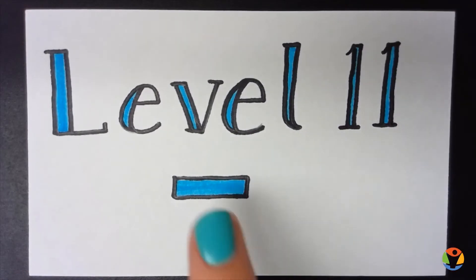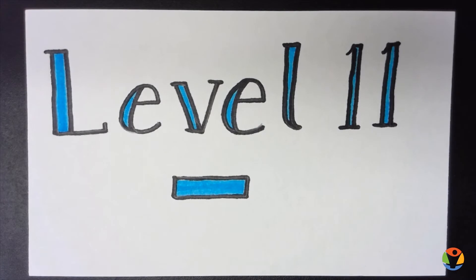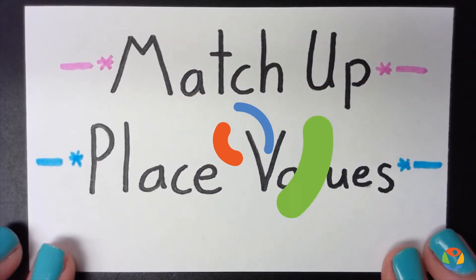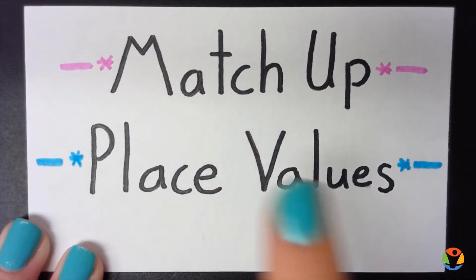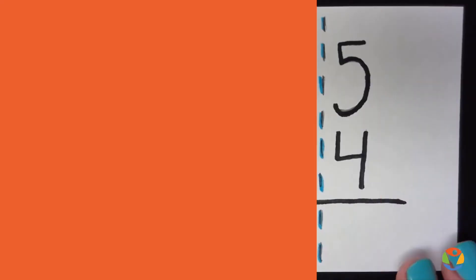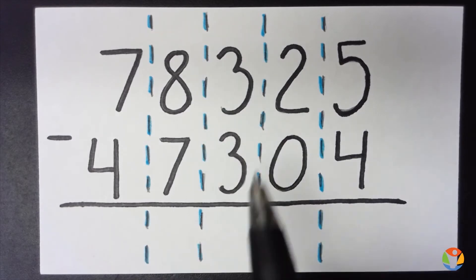This is level 11 subtraction, so you should be able to do this level after you get done watching this video. With no surprise, our first step is always to match up our place values. Make sure that our numbers line up nice and straight, and here we have all of our numbers nice and straight in their place value lanes.